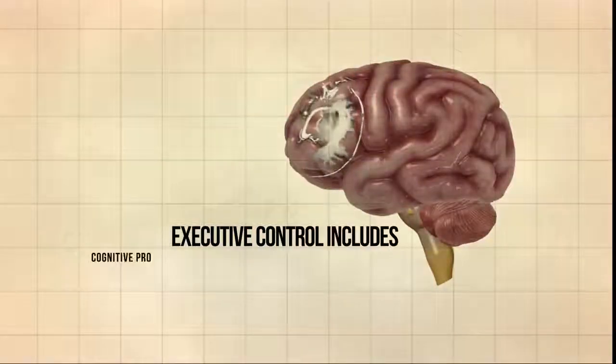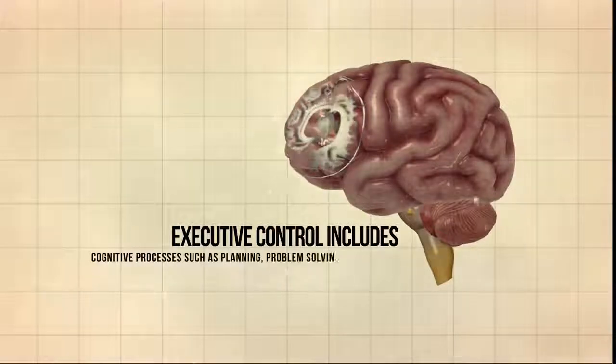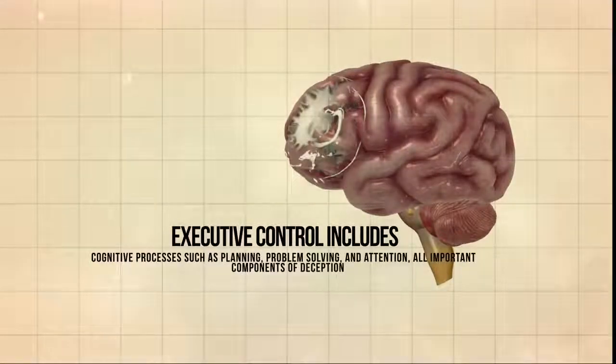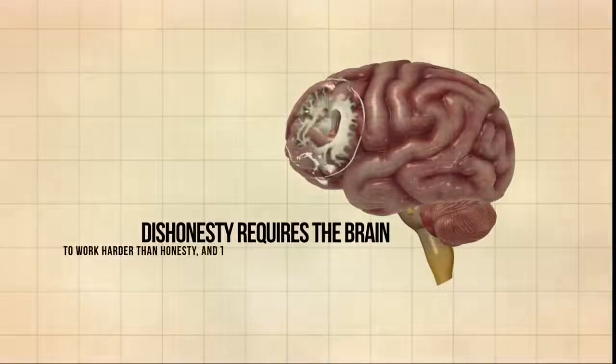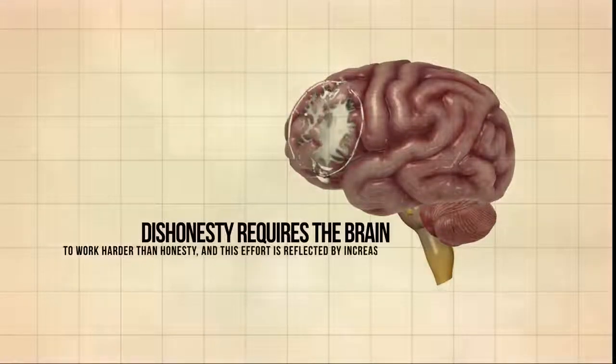Executive control includes cognitive processes such as planning, problem solving, and attention, all important components of deception. Dishonesty requires the brain to work harder than honesty, and this effort is reflected by increased brain activity.